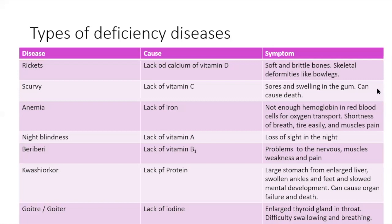Next we have beriberi. Beriberi is caused by a lack of vitamin B1. Symptoms include problems to the nervous system or nerves, muscle weakness, and pain. Next we have kwashiorkor. Kwashiorkor is caused by a lack of protein in the diet. Symptoms include a large stomach from an enlarged liver, swollen ankles and feet, and slowed mental development.